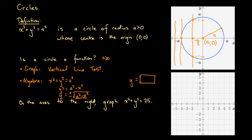This expression means that for any x value between minus a and a, we get two different values: a positive square root and a negative square root. That means y takes on two separate values for a single unique value of x, and because that happens, it's not a function. We can say with certainty it's not a function, having shown it both graphically and algebraically.